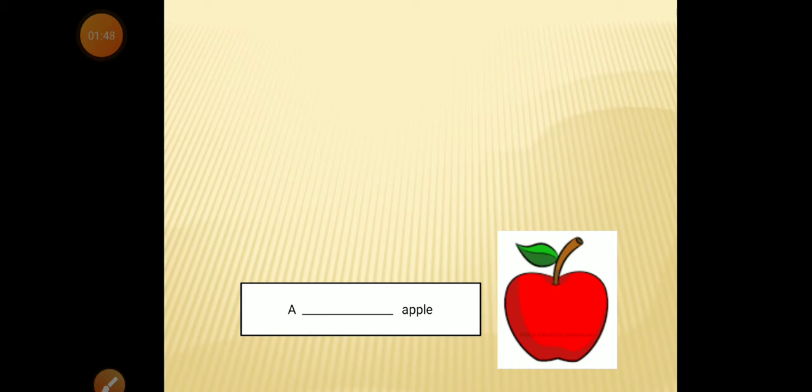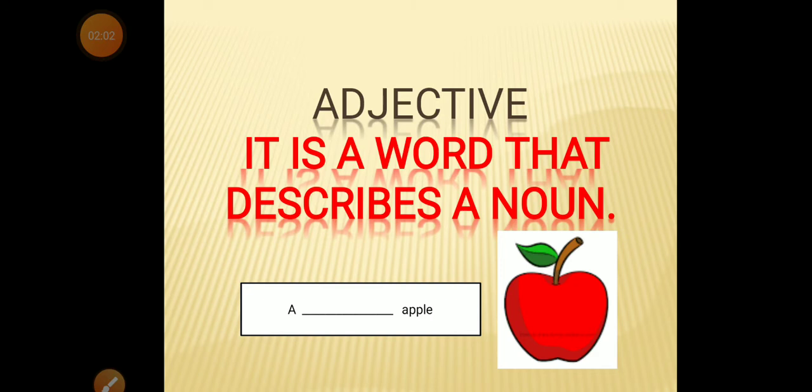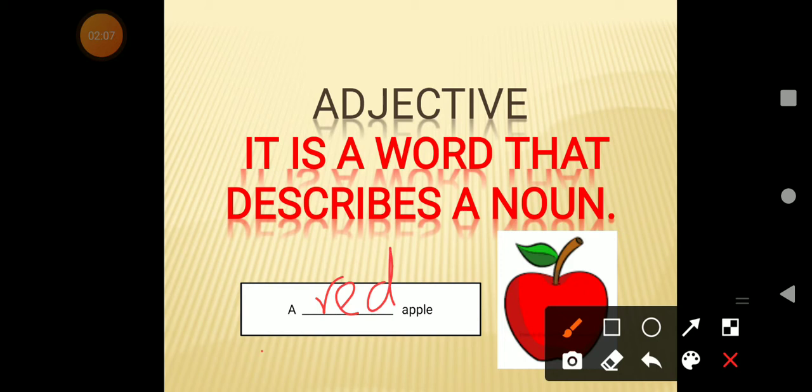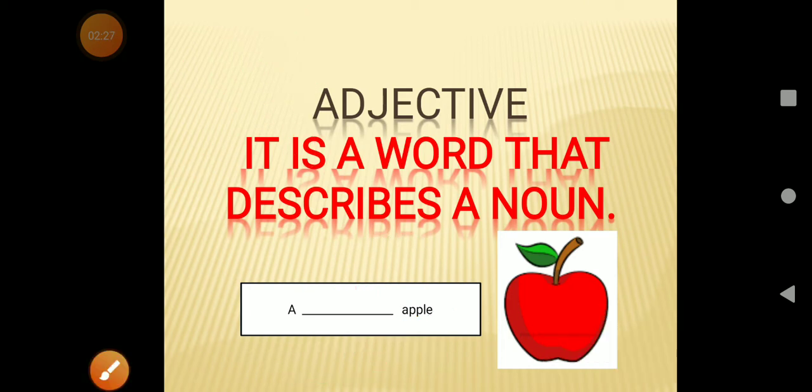You can say juicy. You can say red. So most of you would have said red. A red apple. Some of you might have said juicy. So the word red or the word juicy, these words are describing the noun that is apple. These words red and juicy are called adjectives because they are describing a noun.